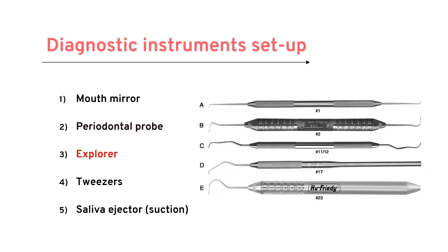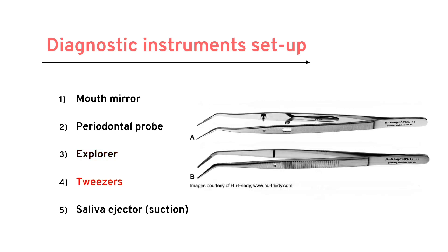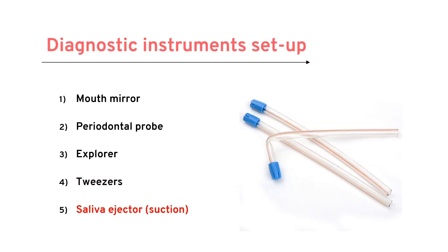Explorers are very sharp instruments used to examine tooth surfaces for cavities, calculus, or defects using the sense of touch. Tweezers are used to place and remove small objects from the oral cavity, such as cotton pellets, root canal instruments, and wedges. The saliva ejector's function is to remove saliva and maintain a dry field using low-volume evacuation during cementation or impression making.